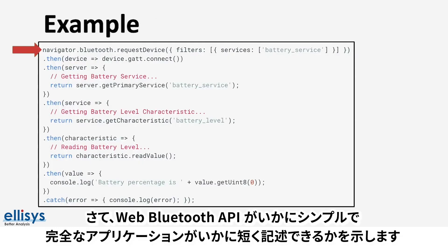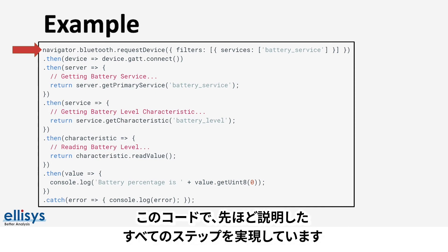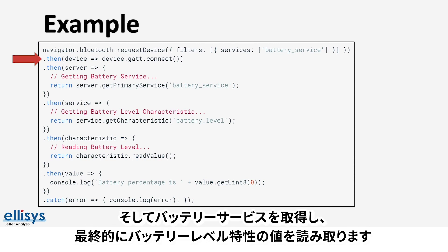Here's an example that shows how simple the web Bluetooth API is, and how short a complete application could potentially be — just a few lines of code. The example shows all the steps we discussed earlier. In this specific case, it scans for a device that includes the standard battery service, then connects to the device, gets the battery service, then the battery level characteristic, and finally reads the battery level characteristic value.